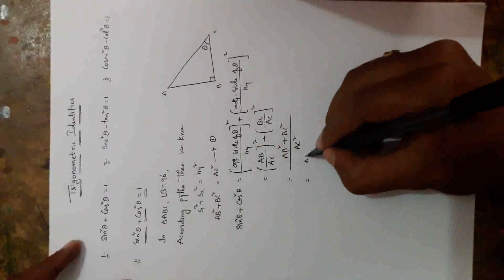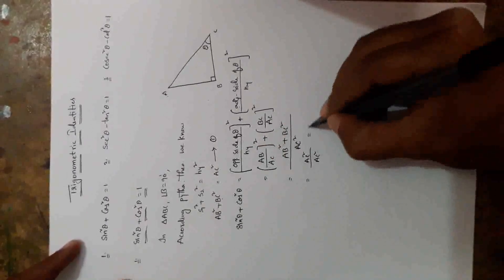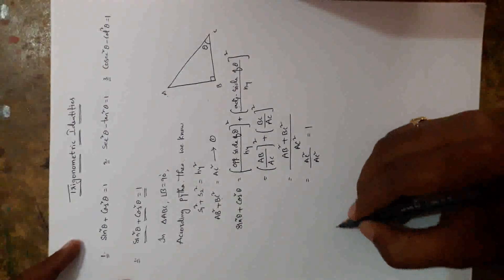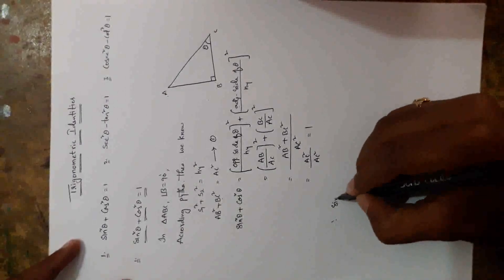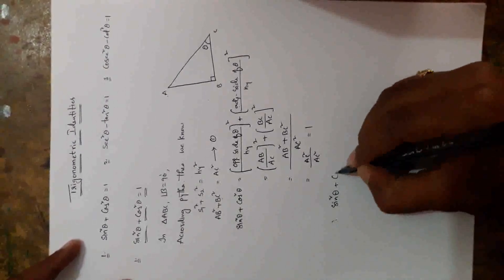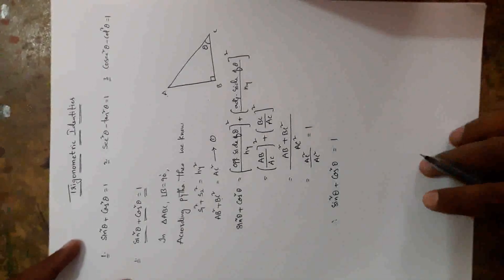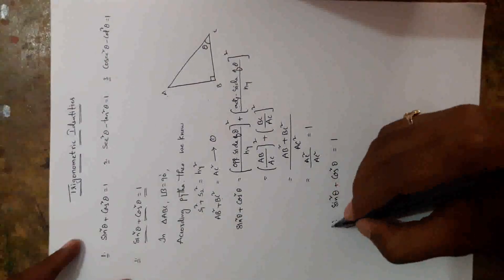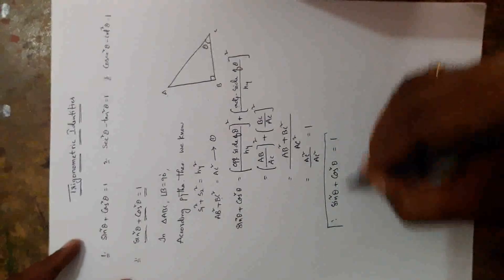So we can write this as AC squared divided by AC squared, which is nothing but 1. Therefore, sin squared theta plus cos squared theta is equal to 1. This is the first trigonometric identity.